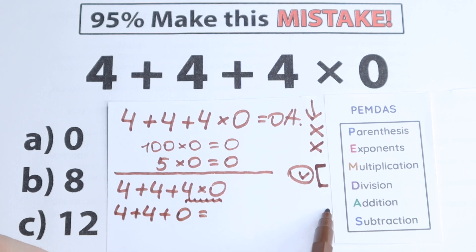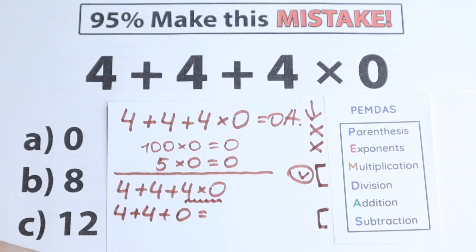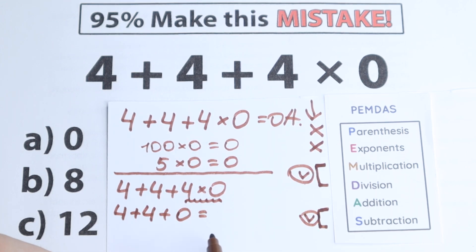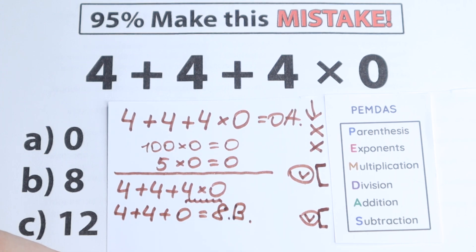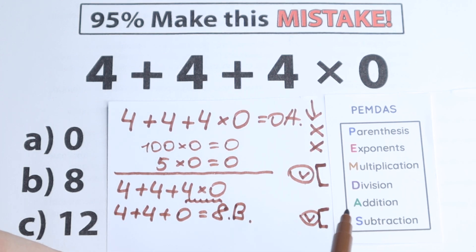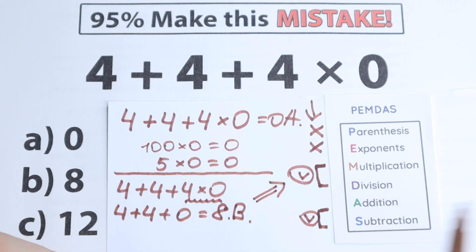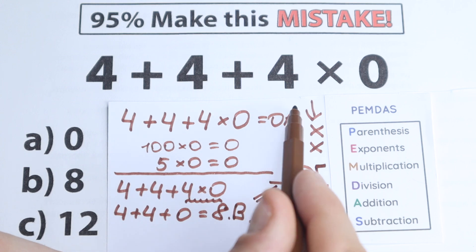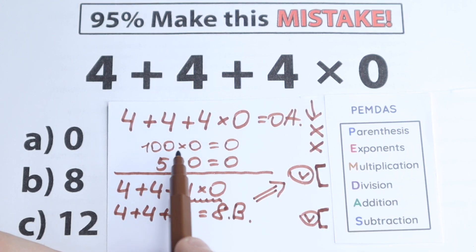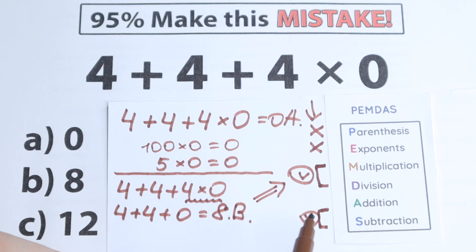The last step is addition and subtraction, which is also one common group. So we simply add: 4 plus 4 equals 8. That's option B. So here's the main question — which answer is correct, 8 (option B) or 0 (option A)? The correct answer is 8, because we solved it according to the correct order of operations. The solution of 0 is absolutely wrong — you need to multiply first, then add.